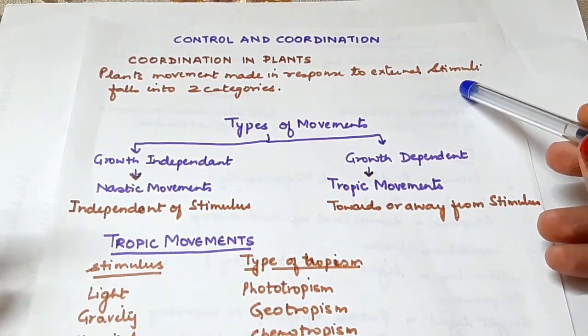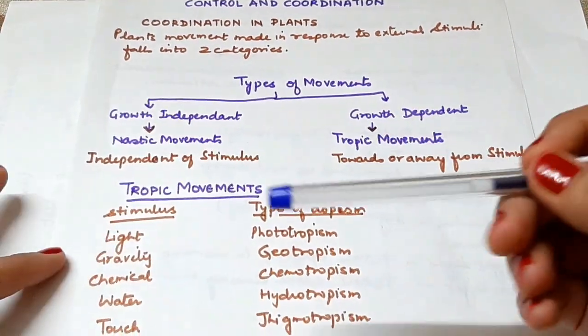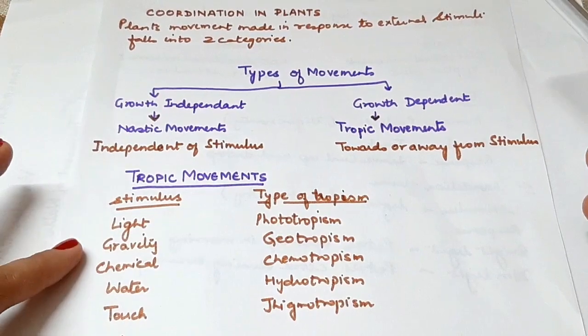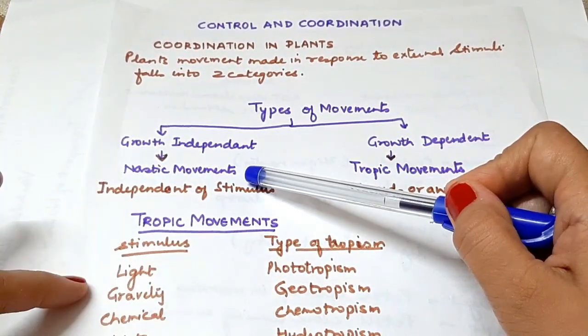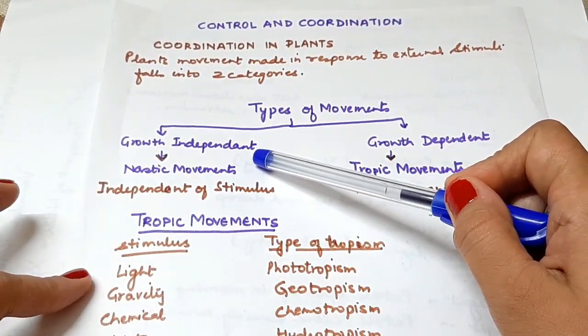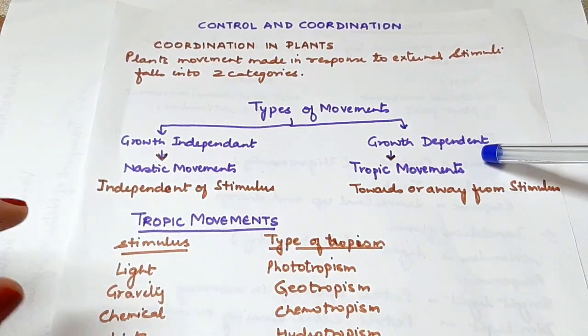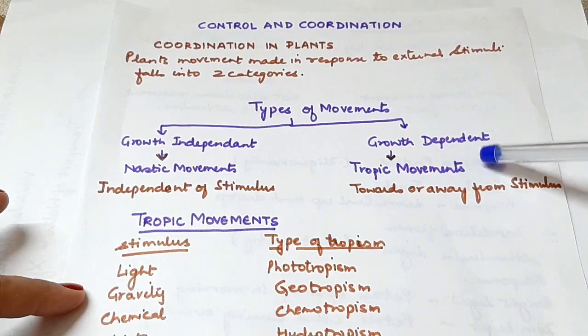The five common external stimuli are light, gravity, chemical, water, and touch. Nastic movements are growth-independent, while trophic movements are growth-dependent. Let's first discuss trophic movements.